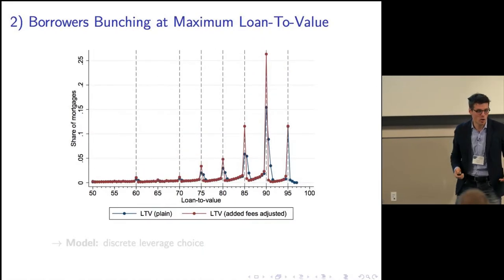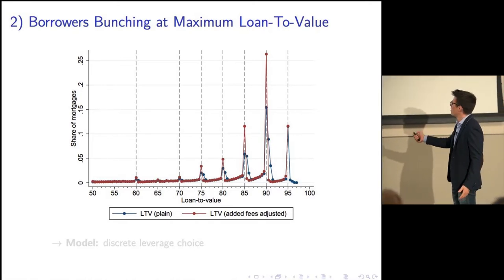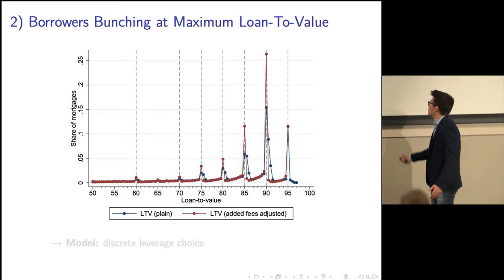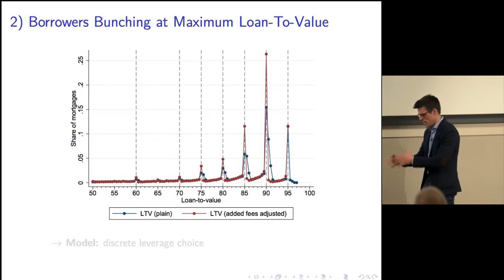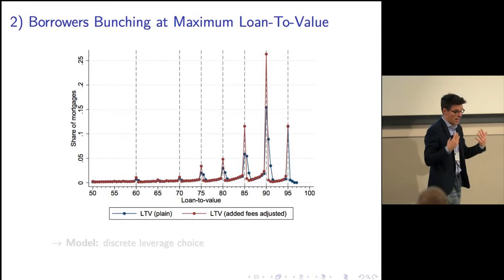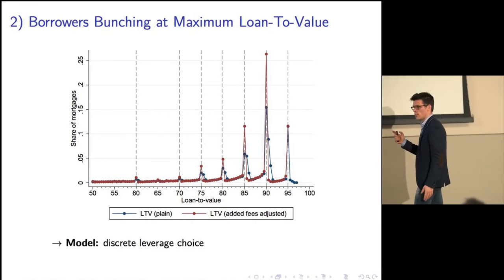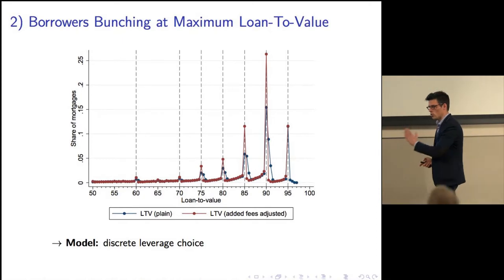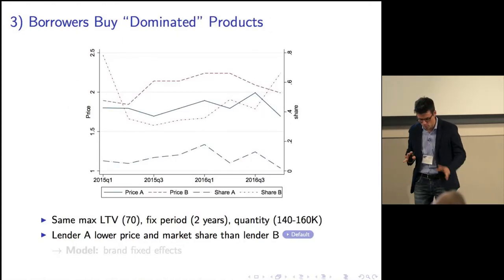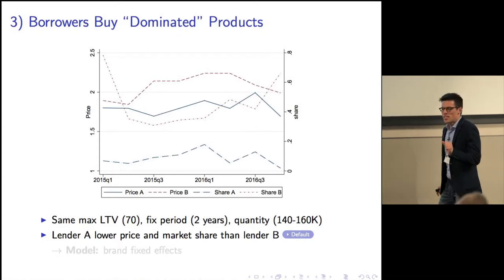A second empirical fact that inspires the model: borrowers react to the price schedule. I plot the share of borrowers for different LTV levels and see a lot of bunching — more than 25 percent of borrowers borrow exactly 90 percent of the value of their house. This helps me in the model because I'm going to model the leverage choice as a discrete choice: you go all the way up to the maximum available LTV bucket.